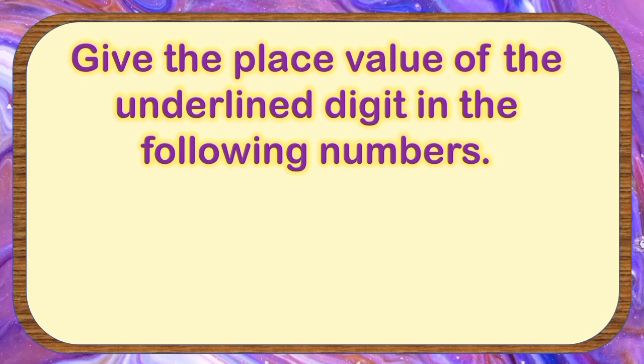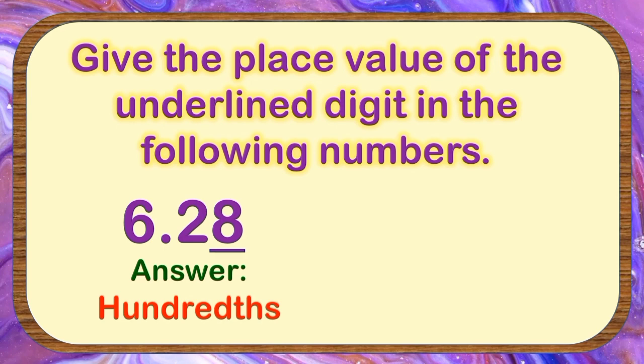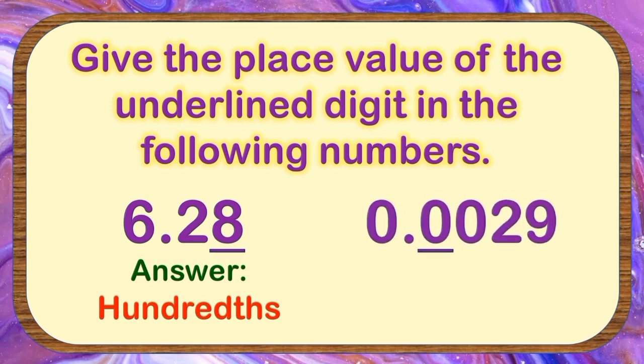Direction: Give the place value of the underlined digit in the following numbers. You are given three seconds to answer each number. The first number is 6.28 hundredths. The underlined digit is 8. Ready? Go! The correct answer is hundredths. The next number is 0.29 hundredths. The underlined digit is 0. Ready? Go! And the correct answer is tenths.